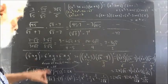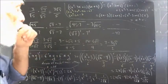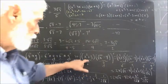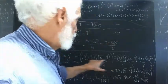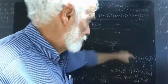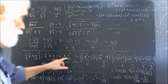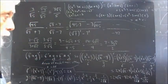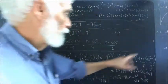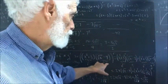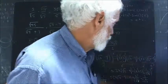The rule says f prime times g — that would be the quantity x squared plus 3, prime, times the square root of x minus 4 — plus f times g prime. That would be the f function, x squared plus 3, multiplied by the derivative of the g function, square root of x minus 4. So we have the derivative of that function.